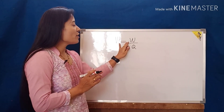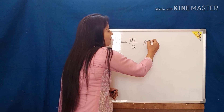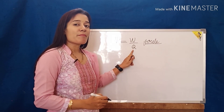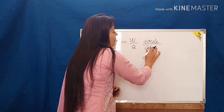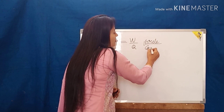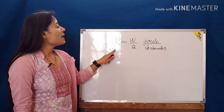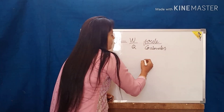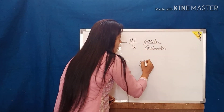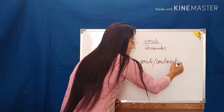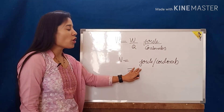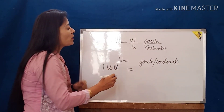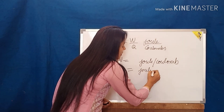The SI unit of work is joule, so work is measured in joules. Charge Q is measured in coulombs. Therefore, the unit of potential difference will be joule per coulomb, which is in short known as volts. So one volt is equal to one joule per coulomb.